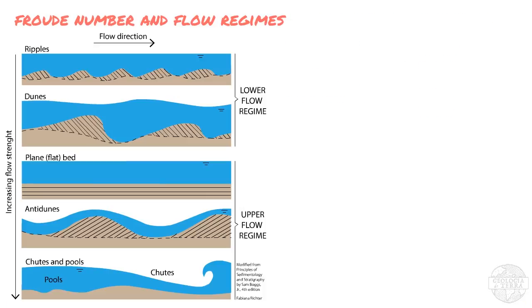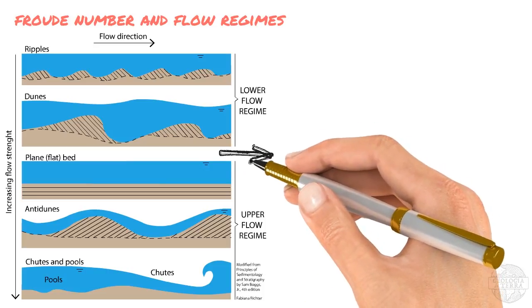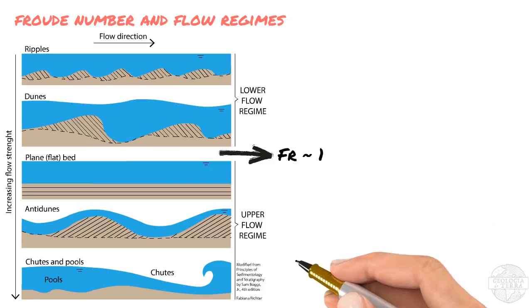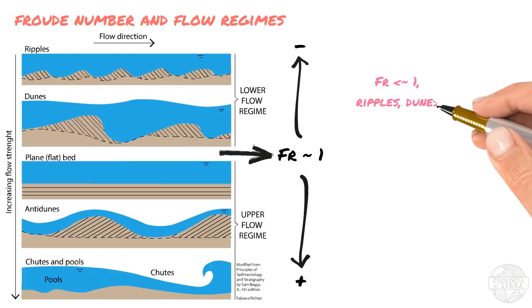Now, the flow number is important for us because it is an indicator of the flow regimes in which bedding occurs. This is because a flow number of around 1 marks the transition between the lower flow regime and the upper flow regime. And in a lower flow regime, with a flow number lower than 1, we have the conditions that generate ripples and dunes.